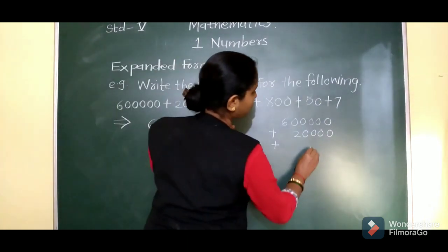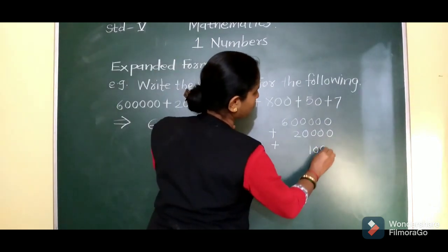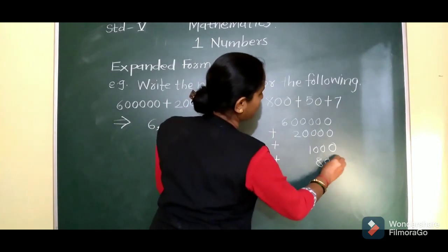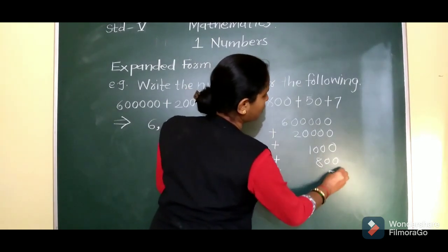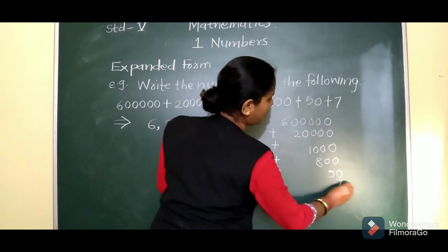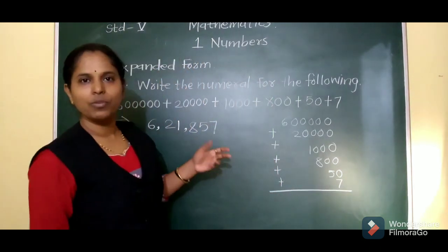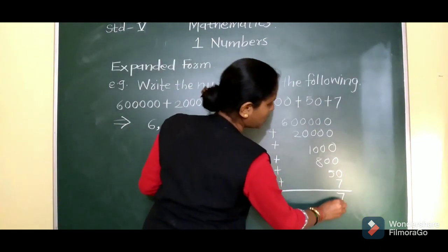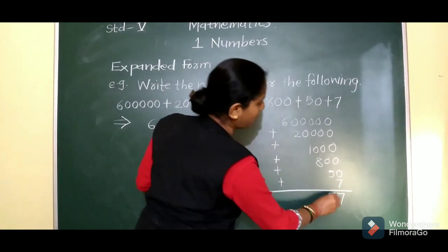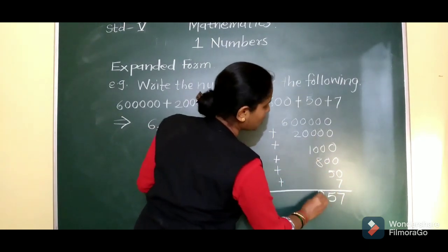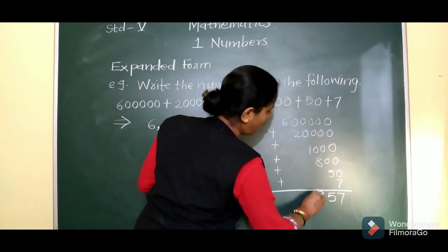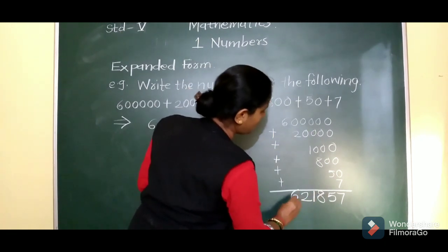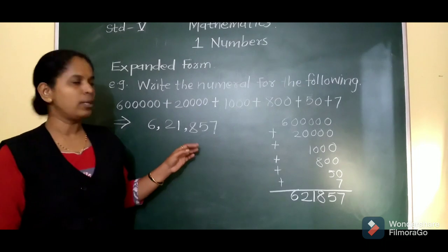Plus 1,000, plus 800, plus 50, and plus 7. After addition you will get the required number: 7, 5, 8, 1, 2, 6 — that is 6,21,857. Look at both the numbers — they match.